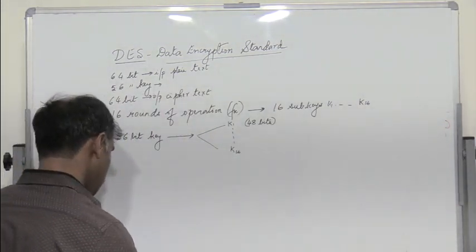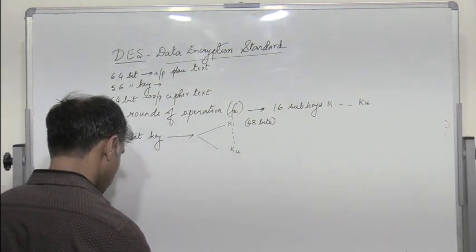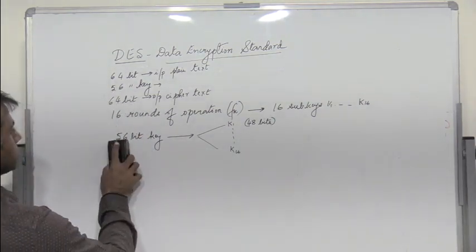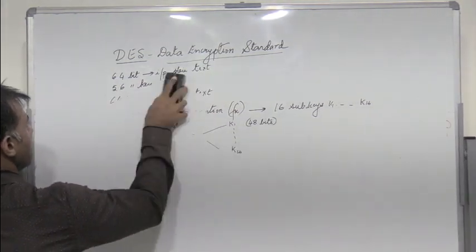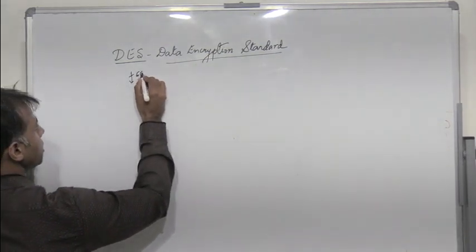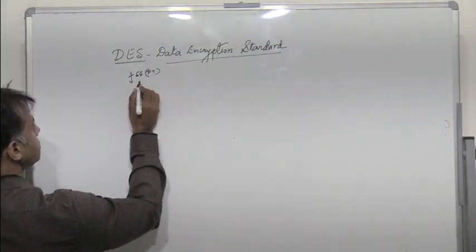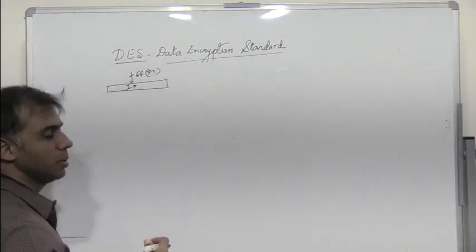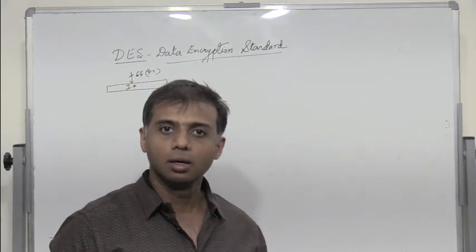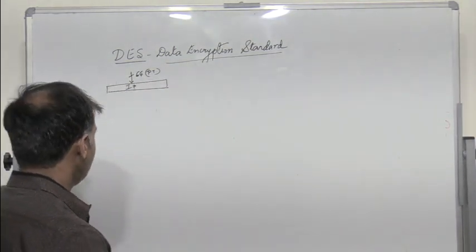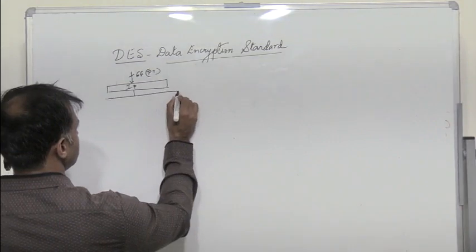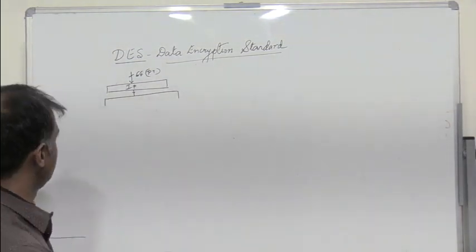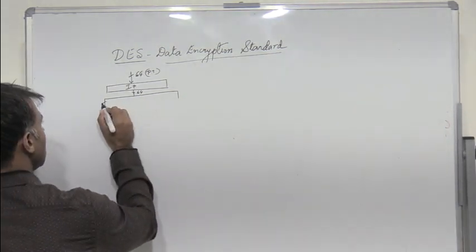Let us briefly understand how DES operates when we talk about encryption. We have 64-bit plaintext, and then we have initial permutation. All the 64 bits are permuted. Then you have the complex function FK. Remember, the block diagram is very similar to SDES.